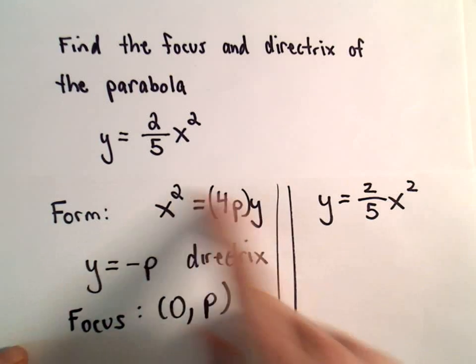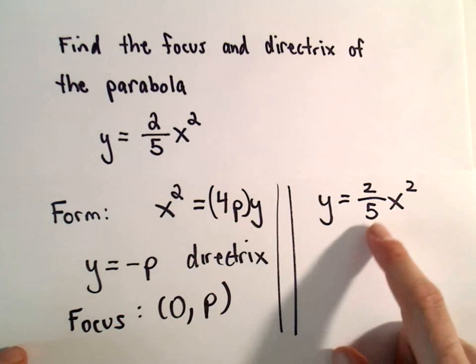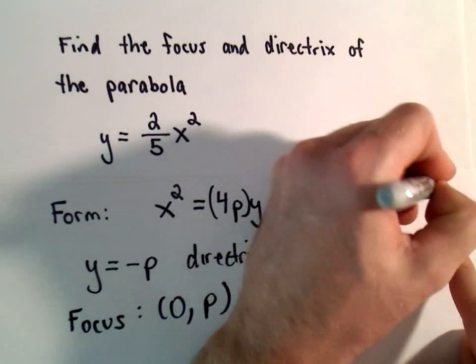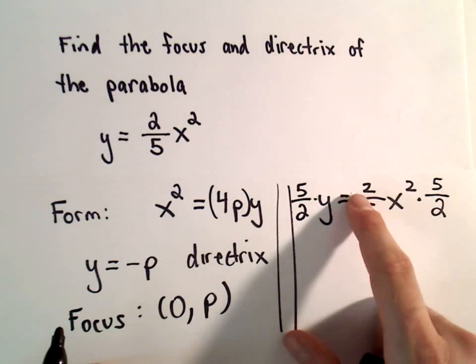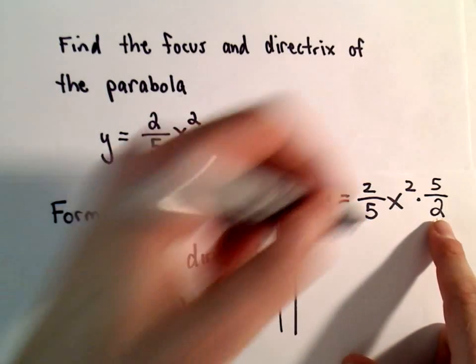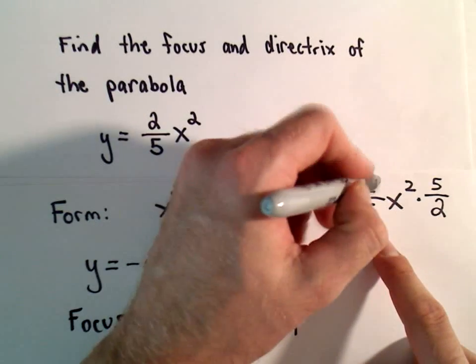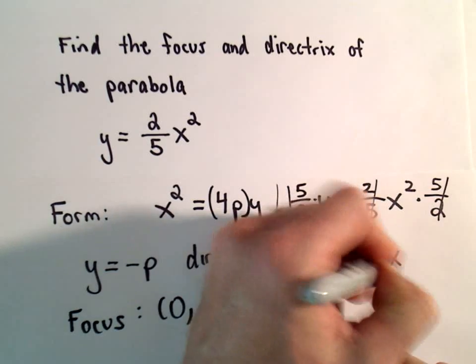Okay, well, again, this to me says get the x squared by itself. So what I'm going to do is multiply both sides by 5 over 2. Right, so two-fifths times 5 over 2, that would just give us 10 over 10, or 1. So we're left with 1x squared.